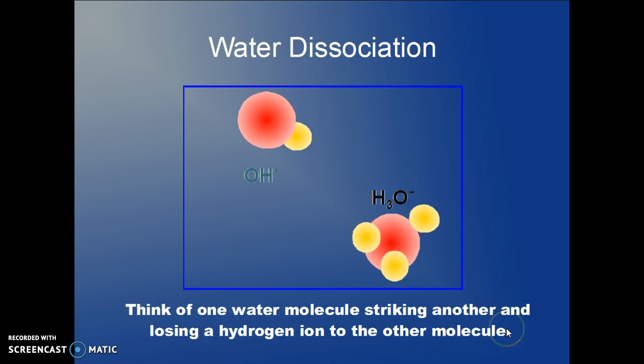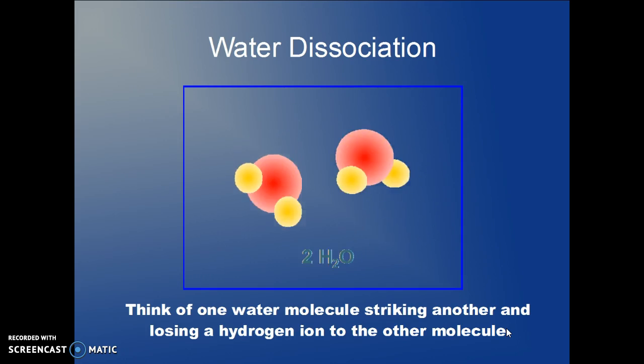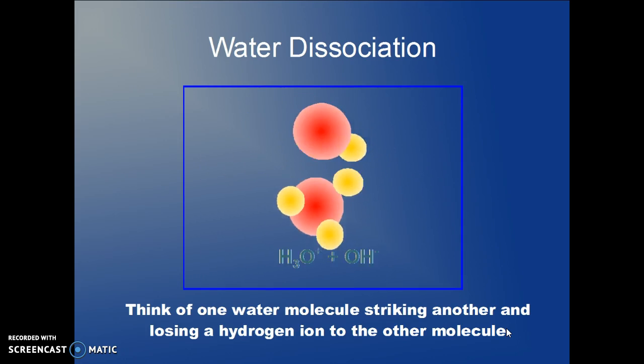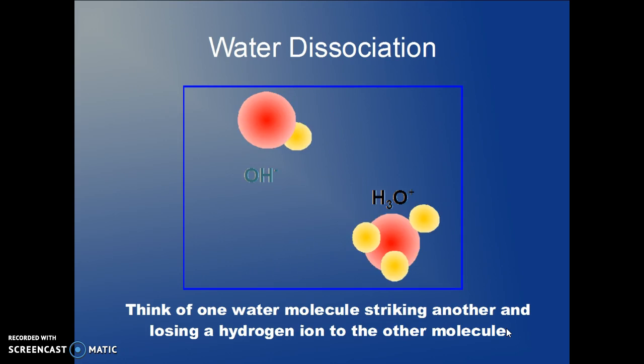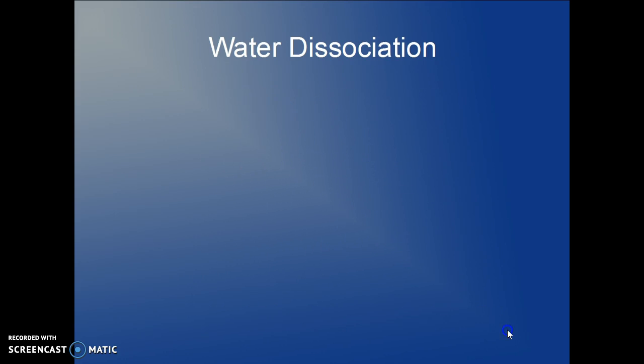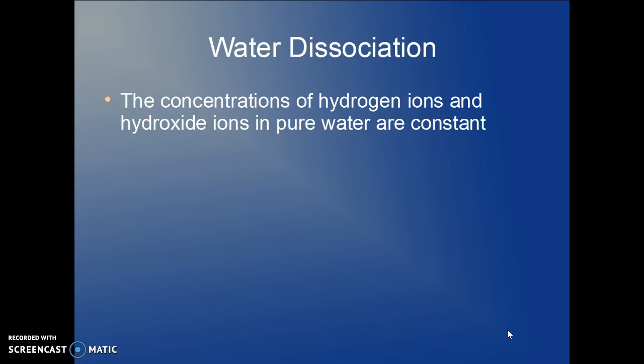And this is one way to look at the dissociation. Two water molecules hit each other and one turns into a hydroxide, the other turns into this hydronium ion.